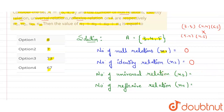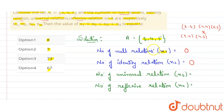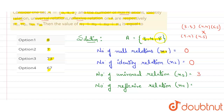For the universal relation: it is a relation in which every element of the set is related to every other element. Here we have three elements, so the number of universal relations N3 = 3, because 3 is related to itself, 3 is related to 4, and 3 is related to 5.